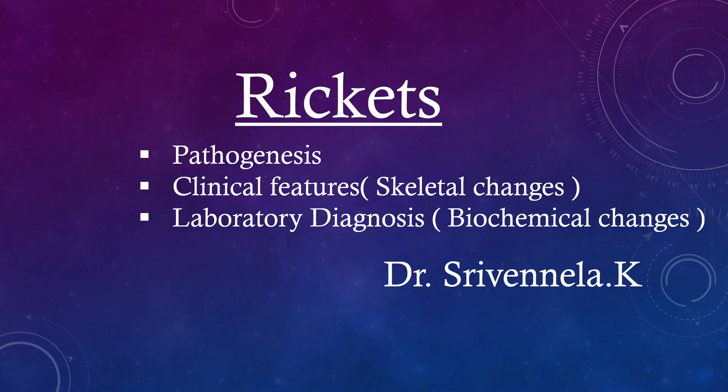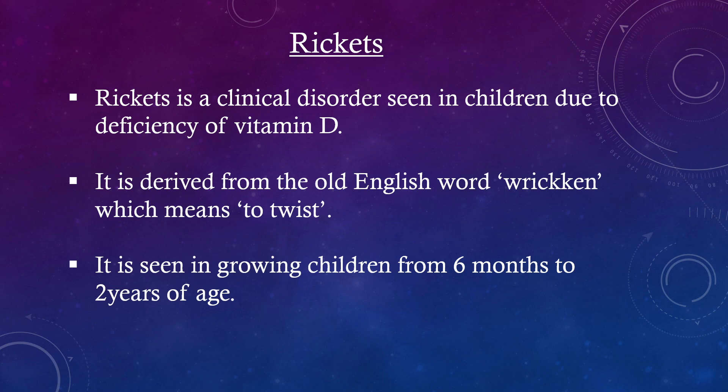Hello everyone, I am Dr. Sri Vanilla. Today's topic is Rickets. Rickets is a clinical disorder seen in children due to deficiency of vitamin D. It is derived from the old English word 'ricken' which means to twist. It is seen in growing children from 6 months to 2 years of age.